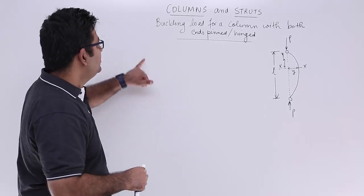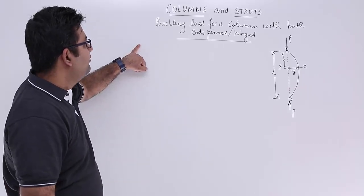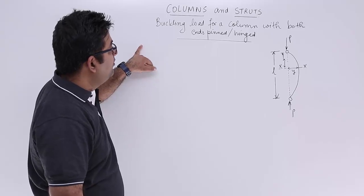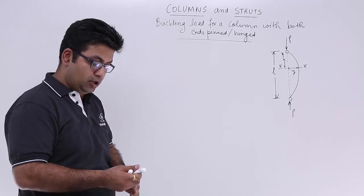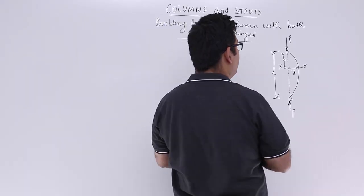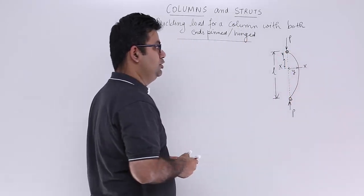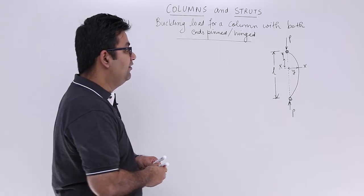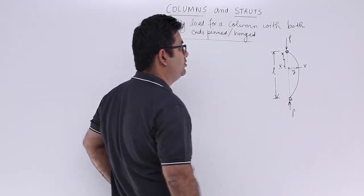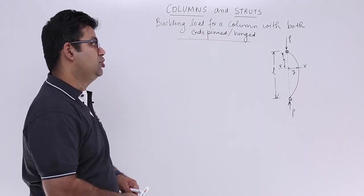Now let's look at the very first end condition, in which we look at the buckling load for a column with both ends pinned or hinged. This is the column which is shown to you, and both the ends have a hinge joint. You have these compressive loads being acted upon this column.